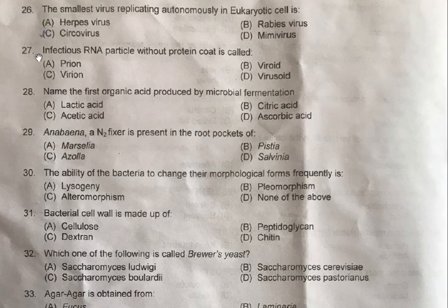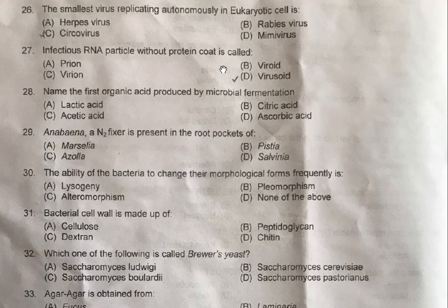Question number 27: Infectious RNA particle without protein coat is called — A: Prion, B: Viroid, C: Virion, D: Virozoid. The correct option is D, Virozoid. Virozoids are virus-like particles that lack the protein coat called capsid. They are responsible for plant diseases — for example, barley yellow dwarf virus.